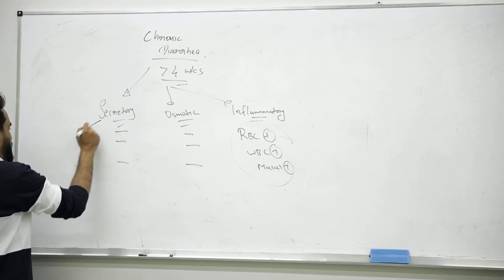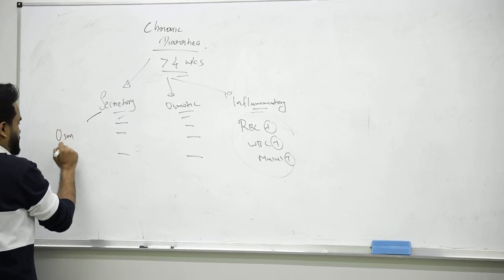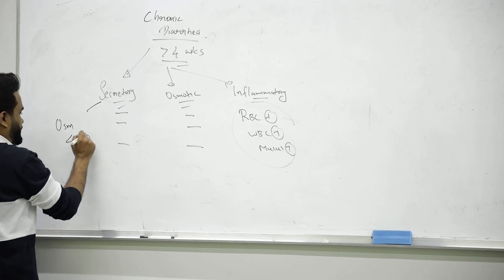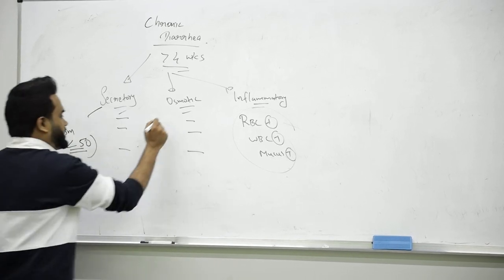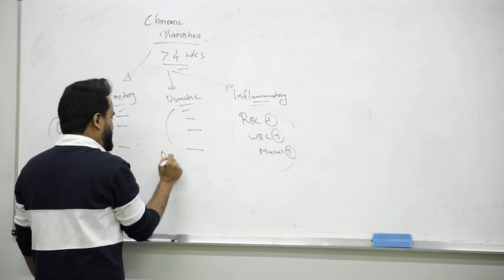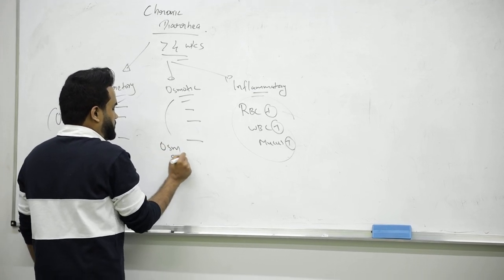In secretory diarrhea, osmolar gap will be less than 50. In osmotic diarrhea, the osmolar gap of stool will be more than 100.